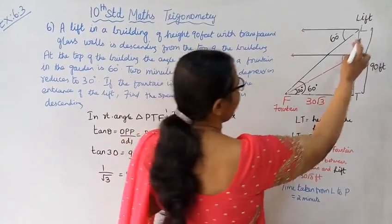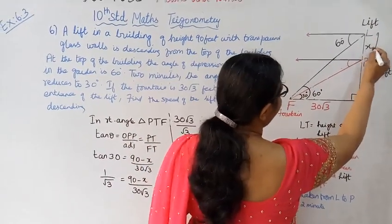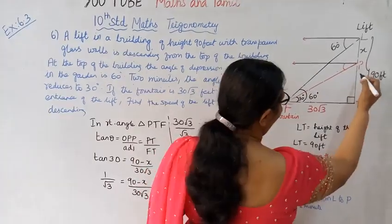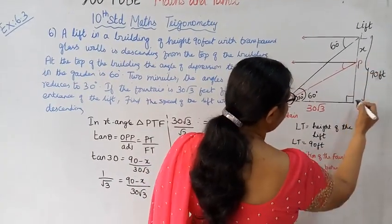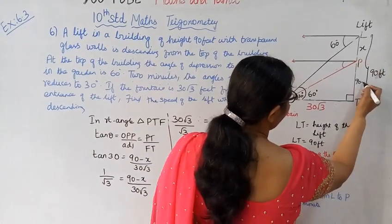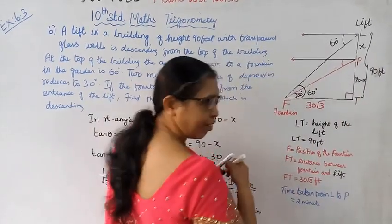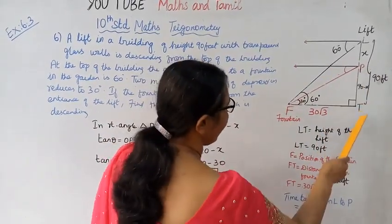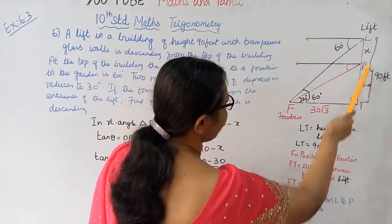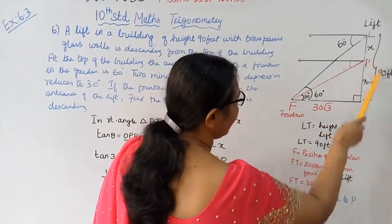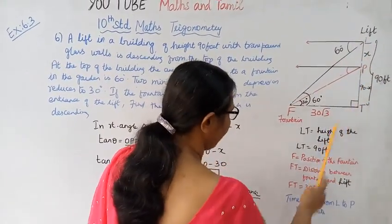We can create two triangles. In triangle PT, the angle is 90 minus X. PT is 90 minus X. This is the full 90, this is X, so this is 90 minus X.